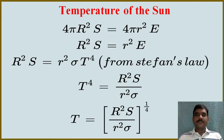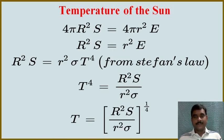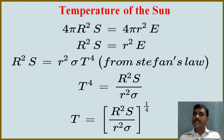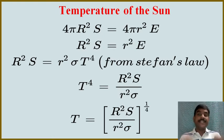The sun is a star in which a continuous nuclear fusion process is taking place. The sun contains hydrogen and helium. Hydrogen nuclei fuse to form helium. In this process, a lot of energy is released, and this process is continuously going on inside the sun, so a lot of radiation is being released.